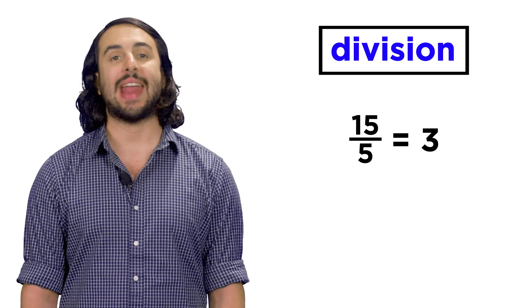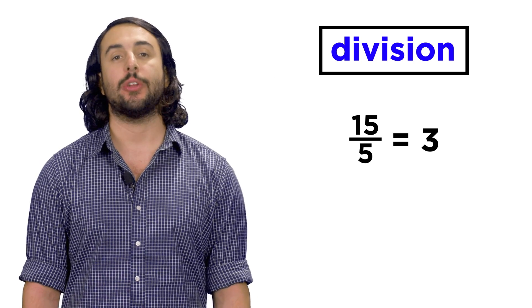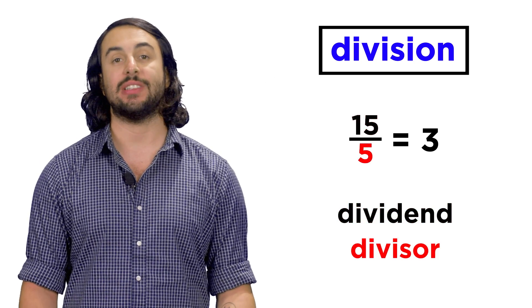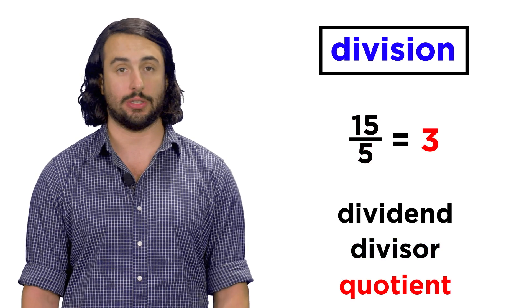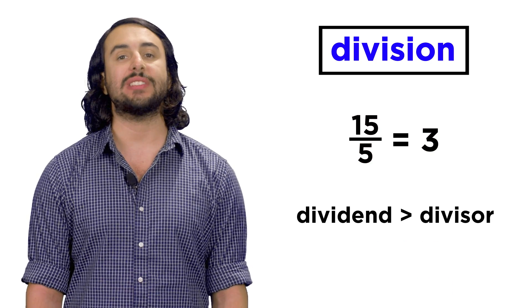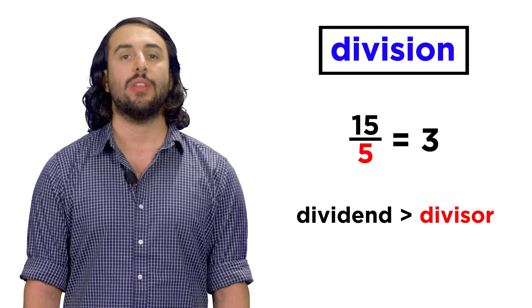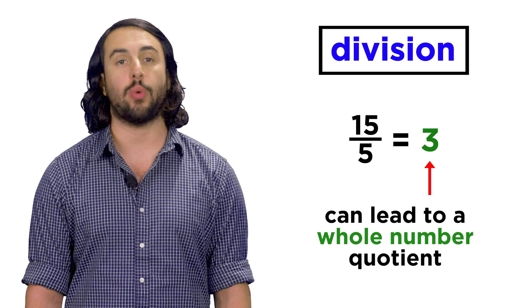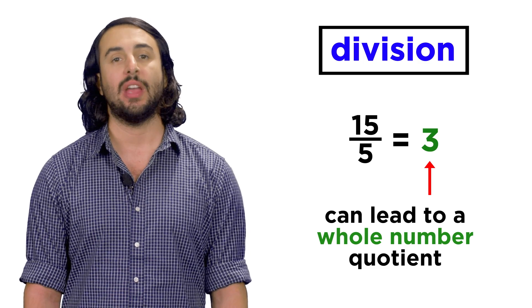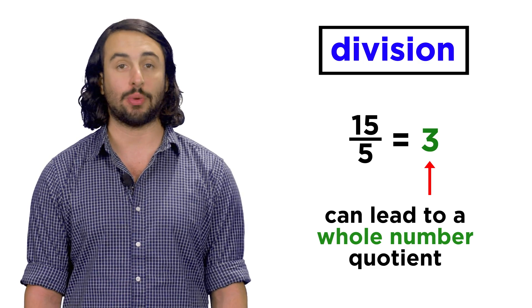We've learned about division, and any time we perform division, there must be a dividend, a divisor, and a quotient. At first, we looked at examples where the dividend is larger than the divisor. This can sometimes result in a quotient that is a whole number, like fifteen divided by five, which gives us three.